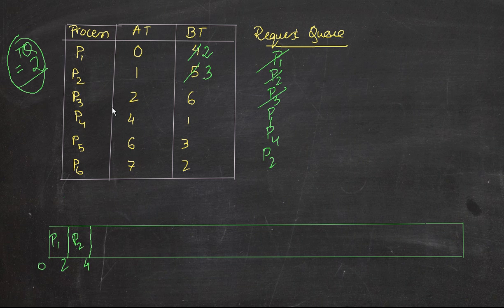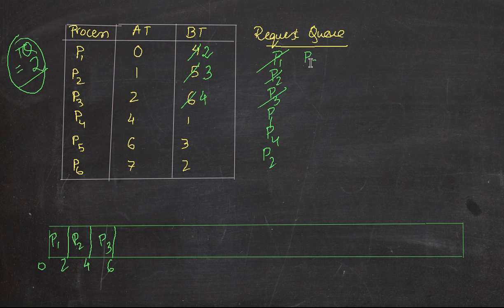Next we go to P3. P3's burst time is 6, and we are executing for 2 seconds again — so from 4 to 6, leaving 4 remaining. Within 6 seconds, we have P5 arriving in the system. Since P3 is still not complete, we again queue P3.